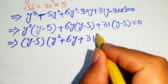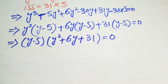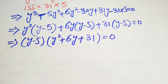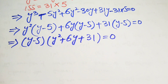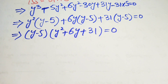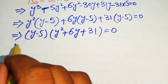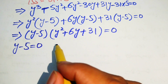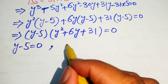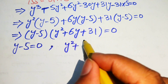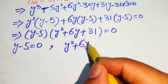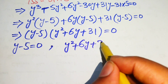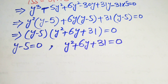Taking (y minus 5) as common factor gives us (y minus 5)(y squared plus 6y plus 31) equals 0. This produces two cases: Case 1 — y minus 5 equals 0, and Case 2 — y squared plus 6y plus 31 equals 0.